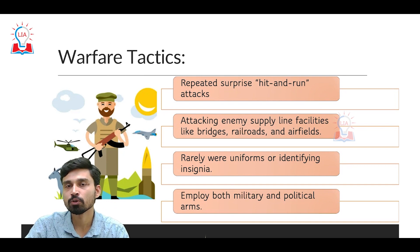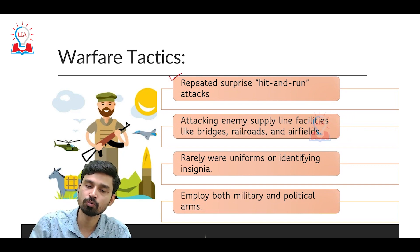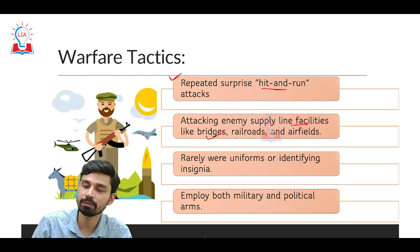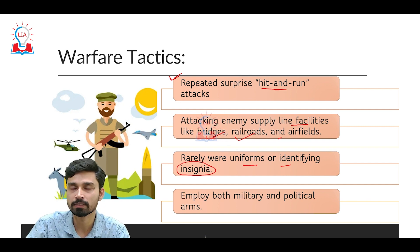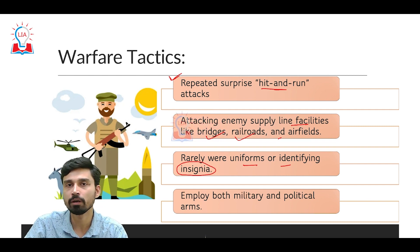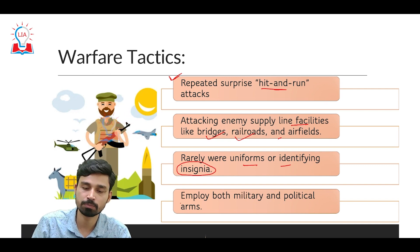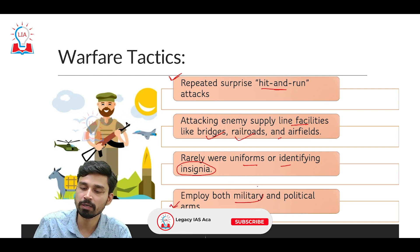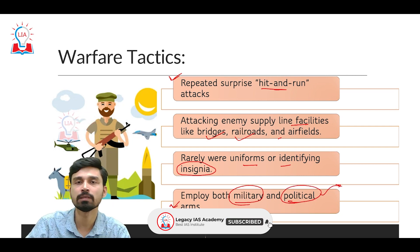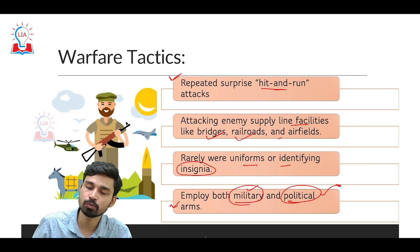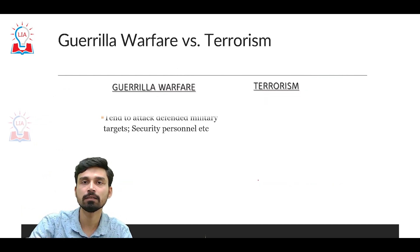Based on these maxims, guerrilla fighters carry out repeated surprise attacks and hit-and-run attacks, targeting enemy supply lines and facilities like bridges, railroads, and airfields. They rarely wear a uniform or identify themselves with any insignia, because maintaining the element of surprise is critical — they look like civilians and then suddenly spring up from the bushes or forest to cause casualties among security personnel. They also employ both a military arm and a political arm: the political arm to gain support of local people, and the military arm to attack the state.